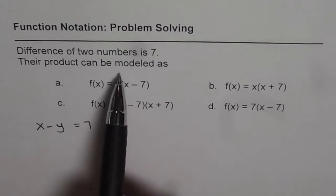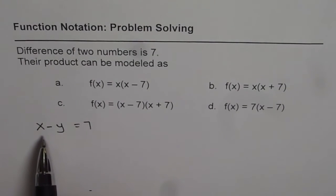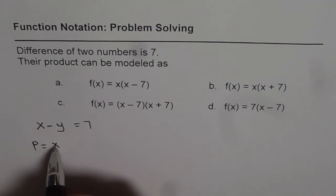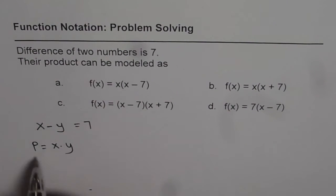Their product can be modeled as, now if the two numbers are x and y, their product should be product of x and y. So the product is equals to x times y. So we get our equation.